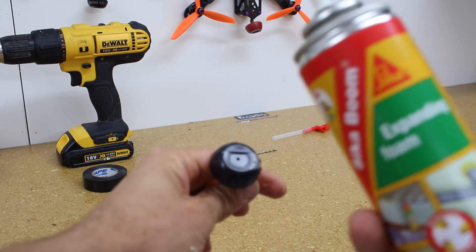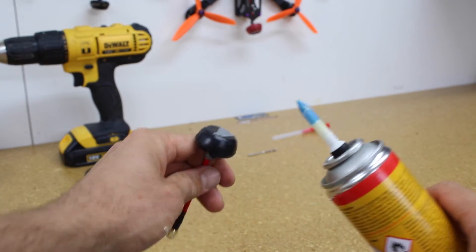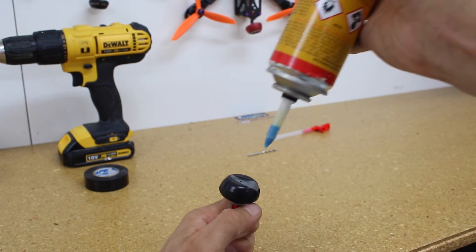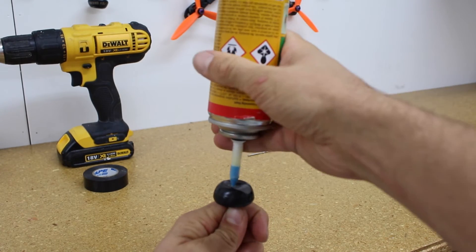You've got your expanding foam with your little nozzle on the top like this, so you want to have your expanding foam pointing down and you want to stick that in the hole.